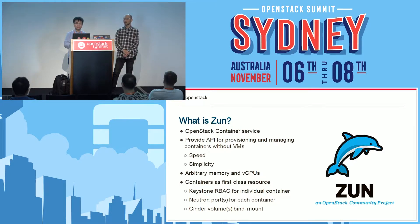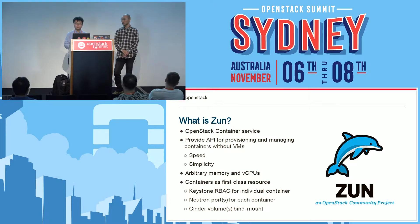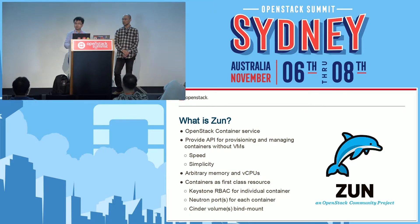There is a Neutron port for each container, so each container will have all the features that come from Neutron. You can bind-mount a Cinder volume to the Zun containers, so you can store the data in Cinder volumes. All these features are unique to Zun and are not provided by other services.